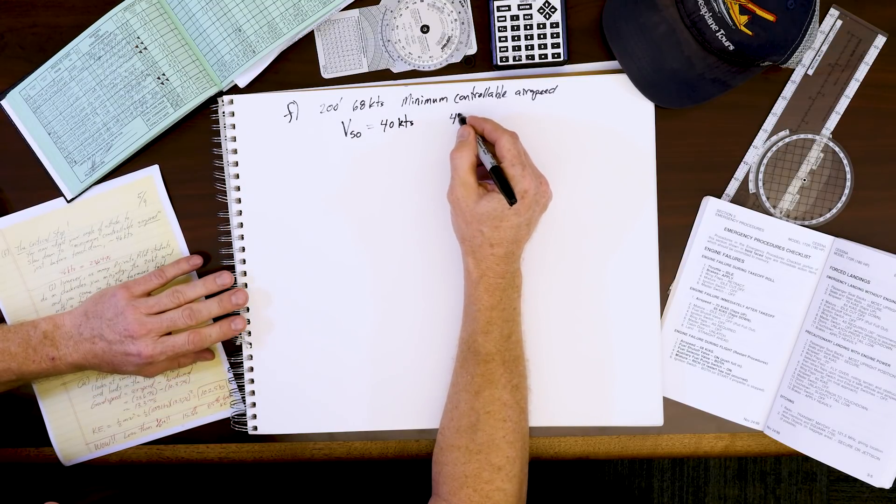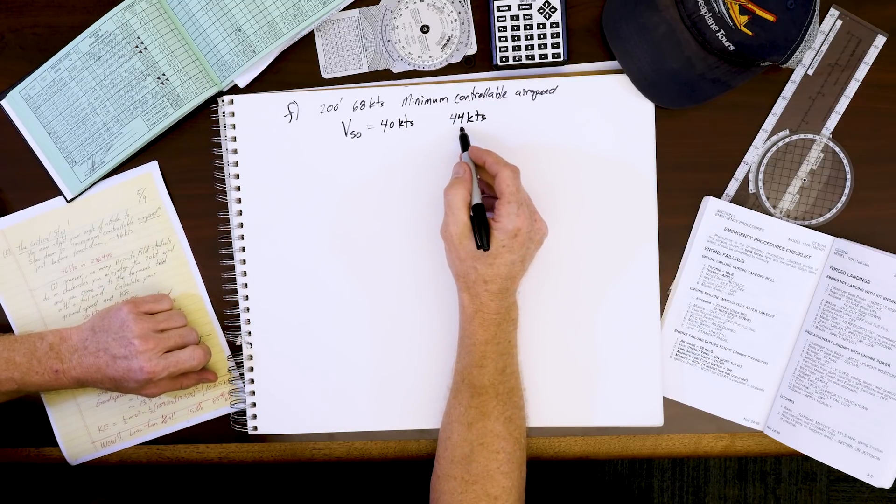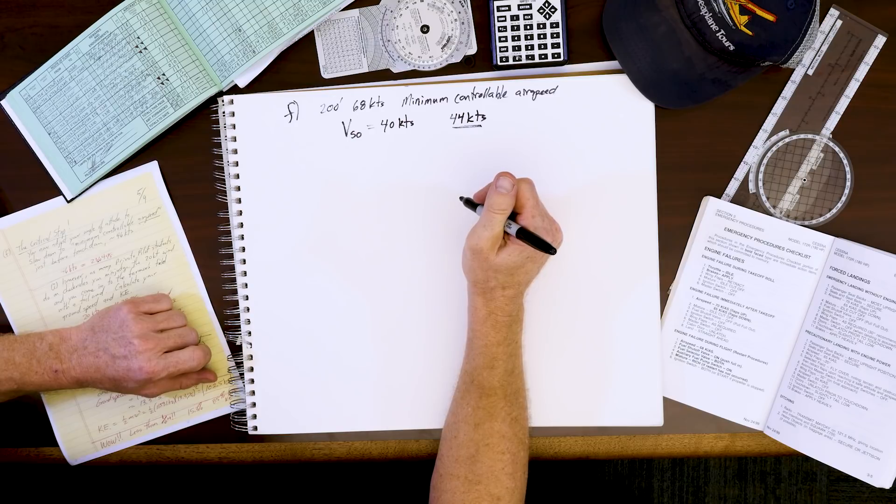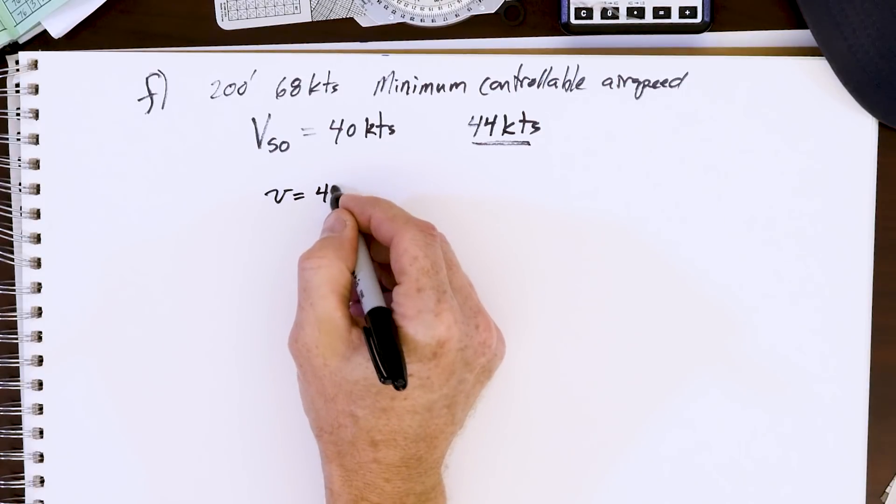We're going to do this exercise at 44 knots. Now pause the video and convert this into meters per second, looking at part A to see your conversion. I will show you my answer: 44 knots is equal to 23.64 meters per second.